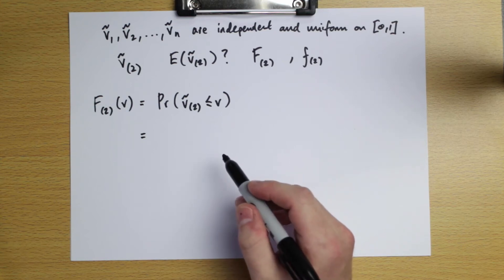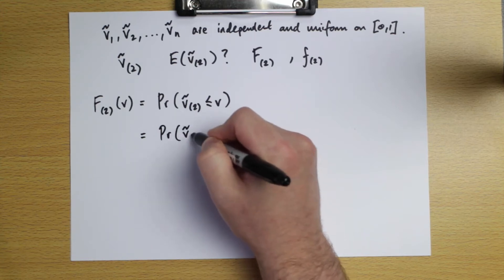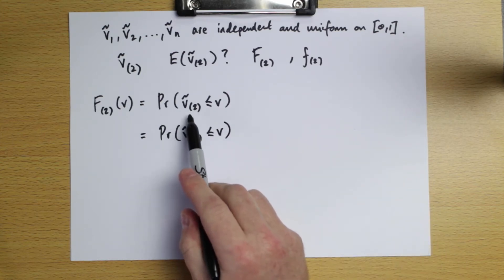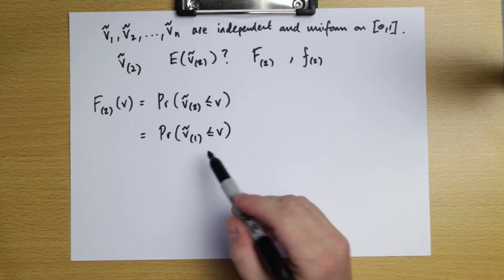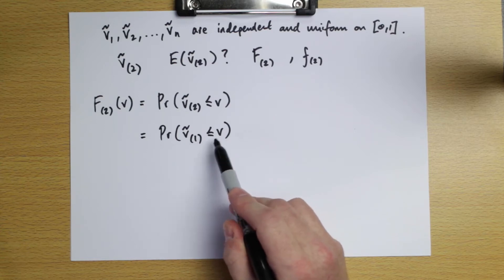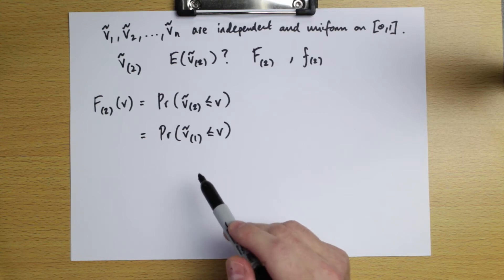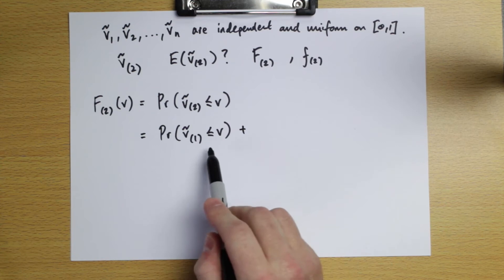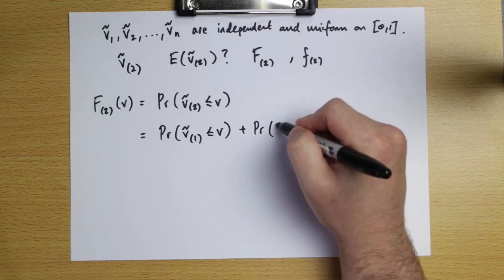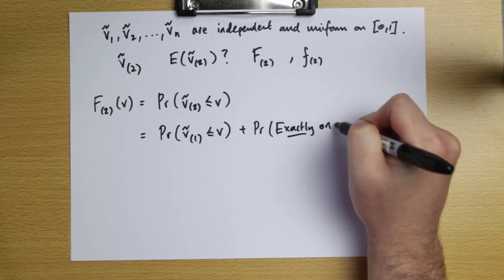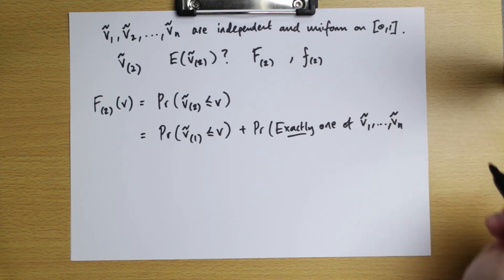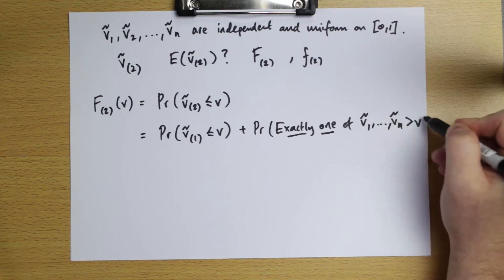We can split it into two cases. One way is that all n values are less than v — if the highest of these is less than v, then the second highest is certainly less than v. The other case is that the first order statistic is higher than v but the second order statistic is less than or equal to v. This second case means exactly one of our n random variables is greater than v.